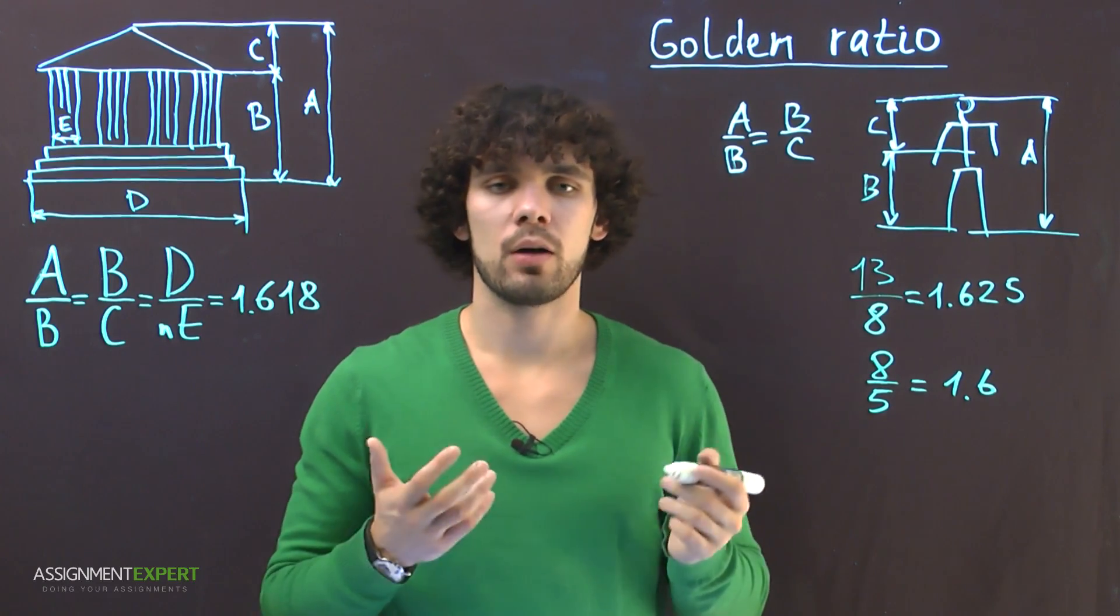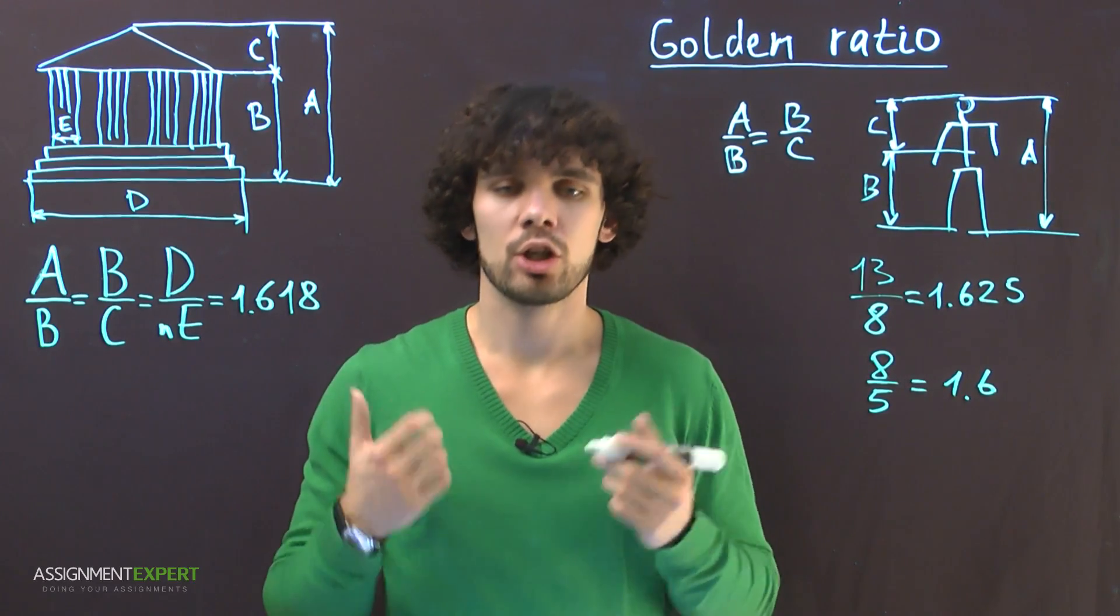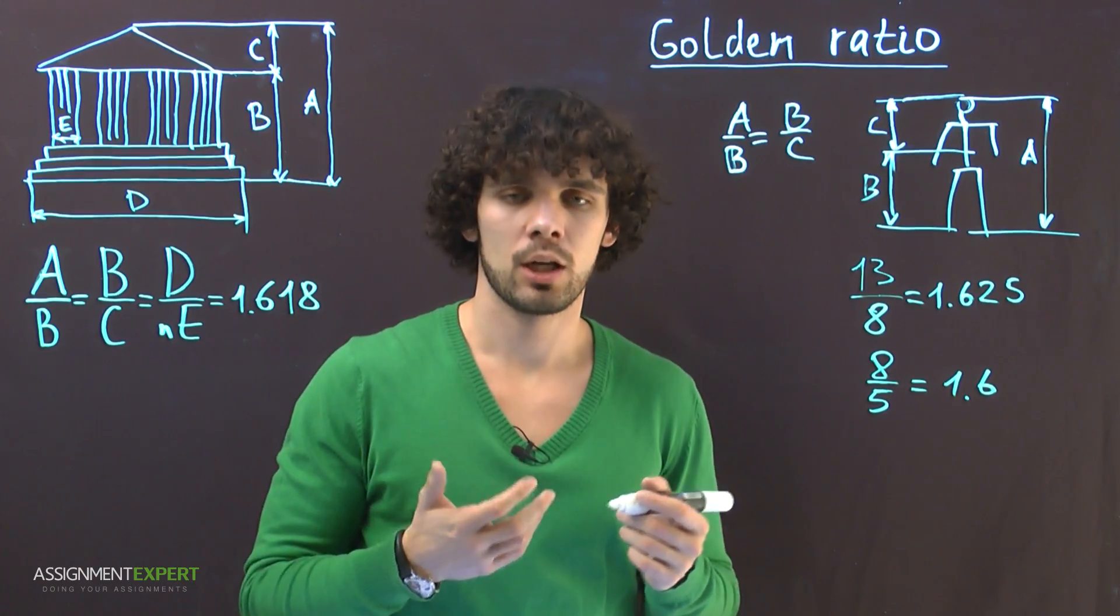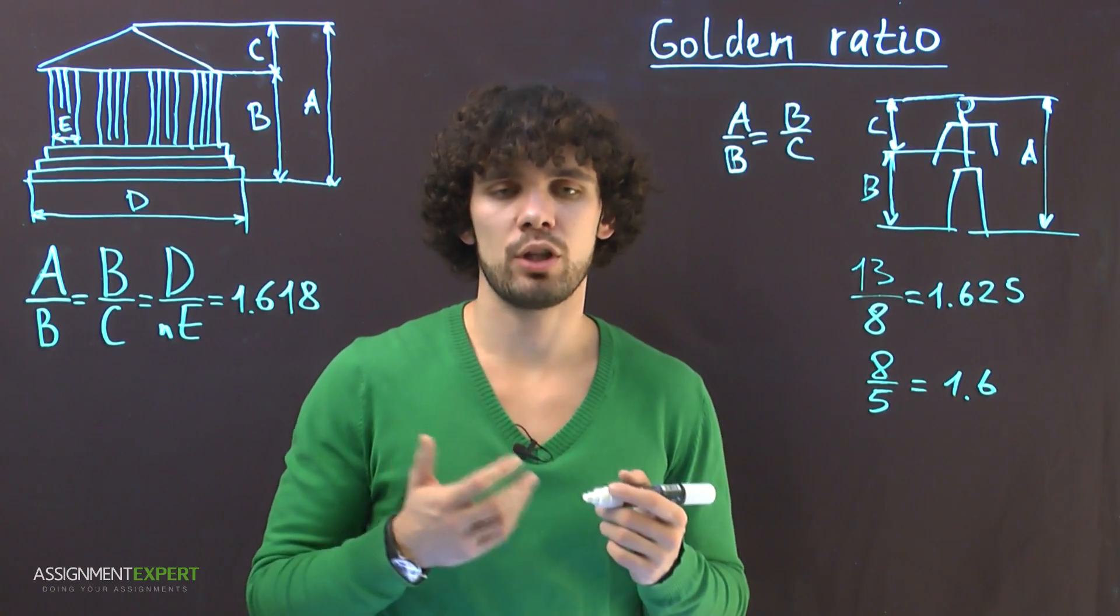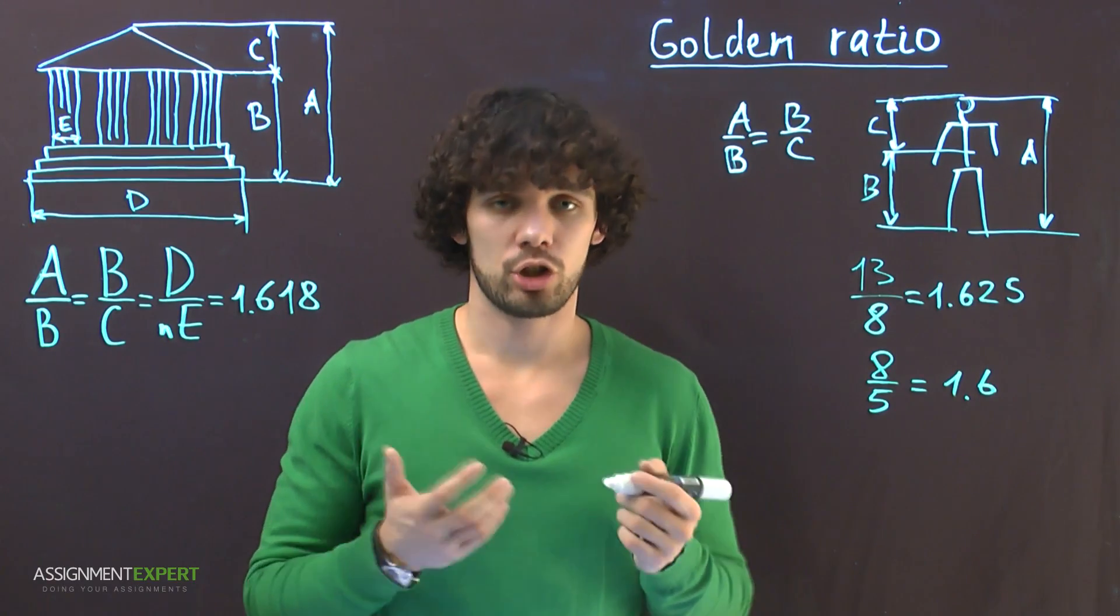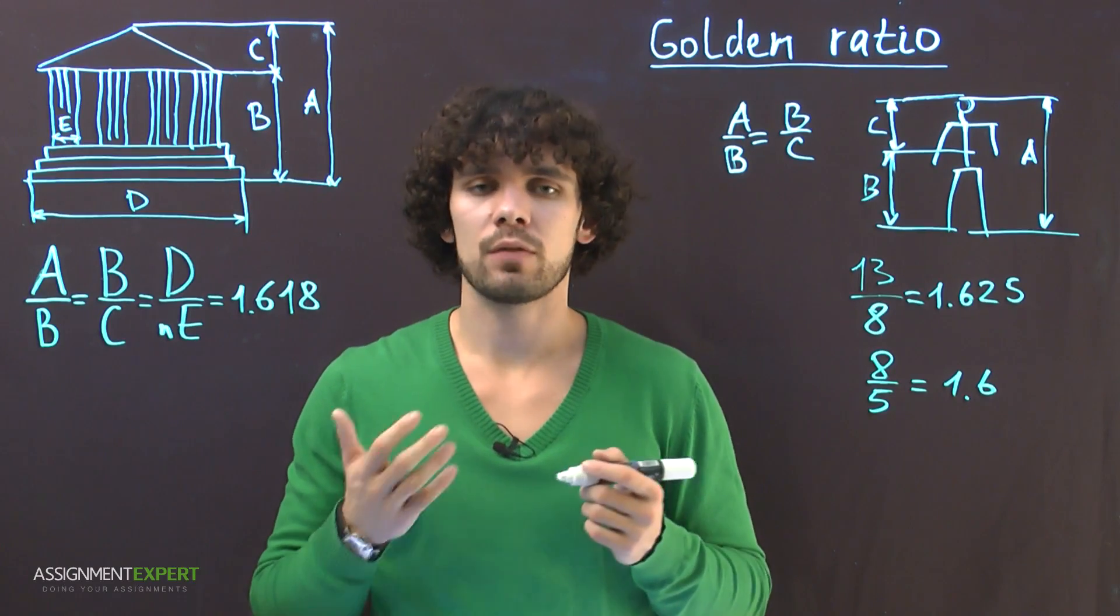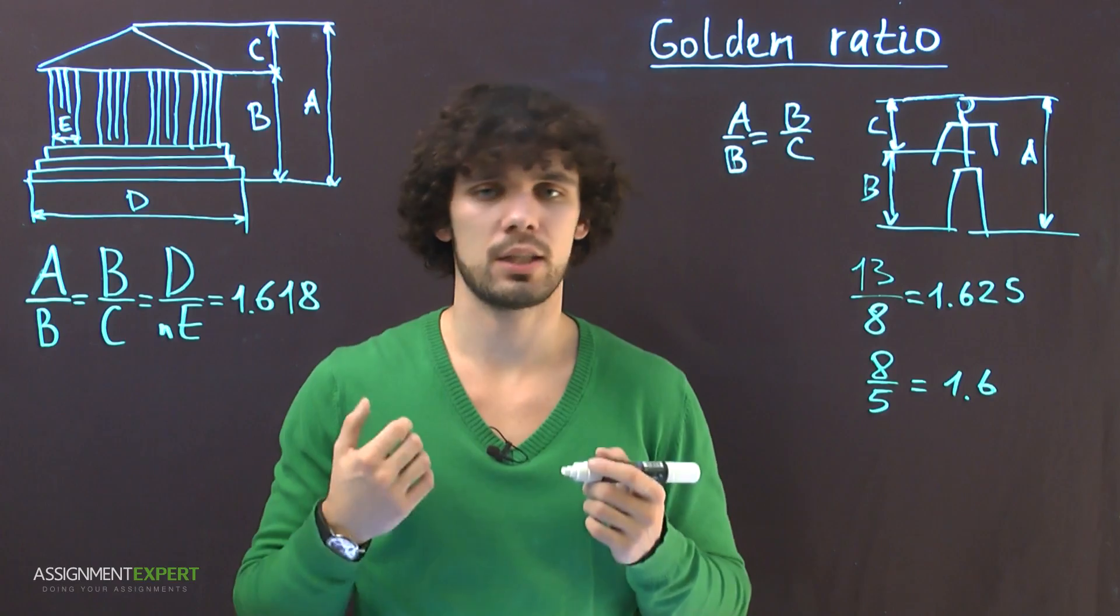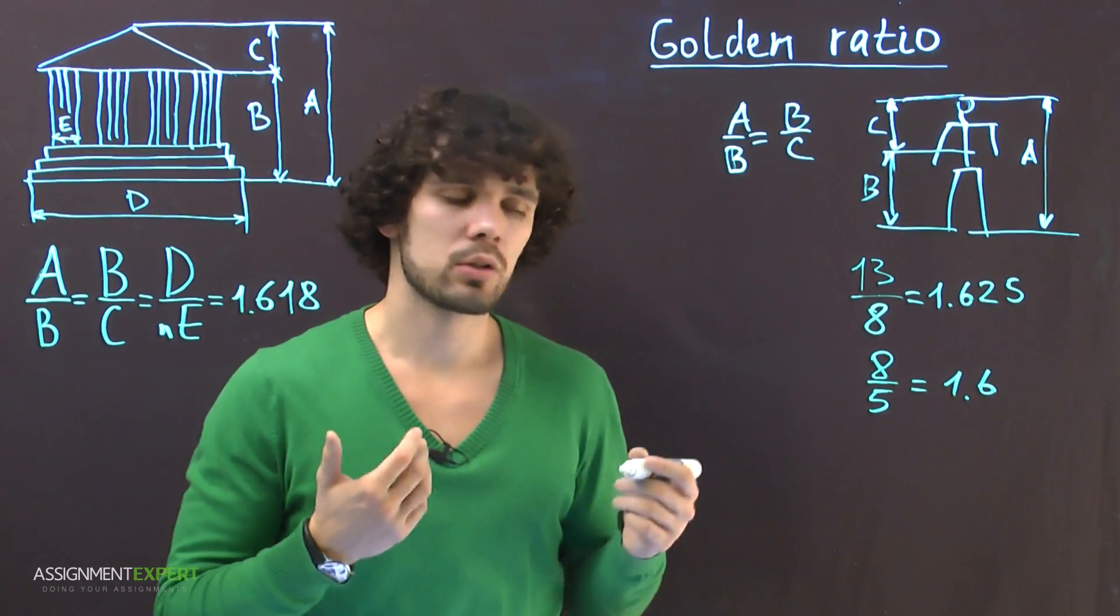These proportions can be found in other body parts as well: shoulders, arms, palms, finger length, and so on. If we write down numbers expressing the length of the segments that fall under the golden ratio rule, we will get Fibonacci numbers, which is a sequence of numbers in which each next number is equal to the sum of two previous numbers.